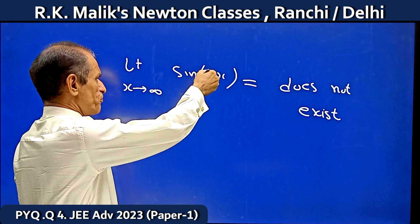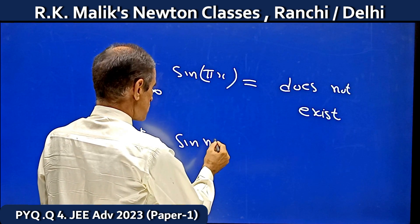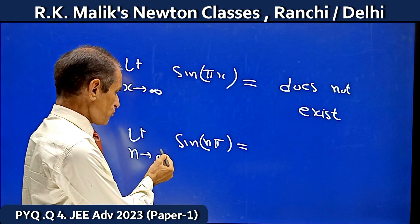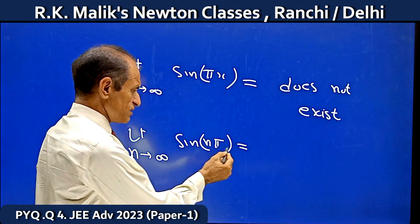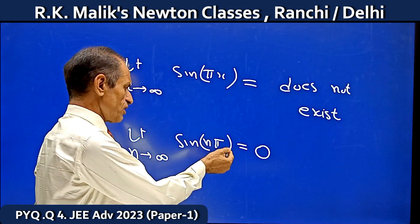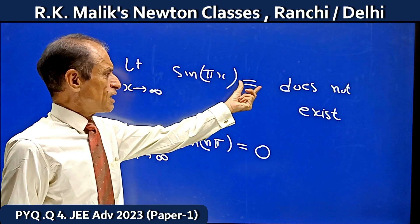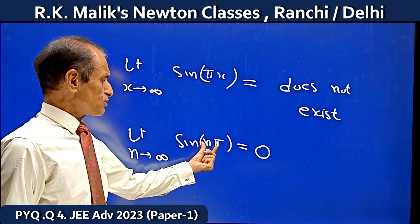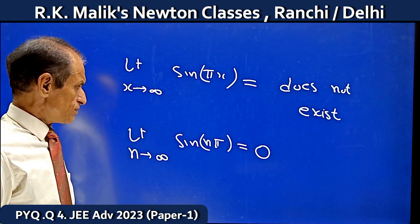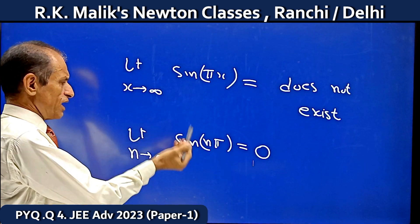But if I write this with n tending to infinity, note that here I am supposing n is a natural number. In this case, even if n is tending to infinity, the answer will be 0 because sin(π), sin(2π), sin(3π) are all 0. So you can see: this is also tending to infinity but the limit does not exist; this is also tending to infinity but the limit is 0. Here x is any real number, here n is a natural number. That is, just by changing the name of the variable, the answer may change.